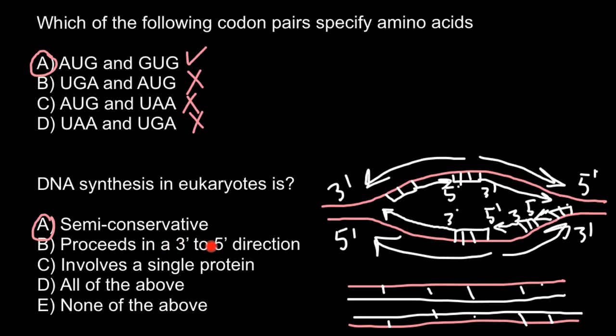And of course new strand of the DNA never grows from 3 prime to 5 prime. We always see growth from 5 prime to 3 prime direction. And of course answer C, it involves single protein, it's also wrong answer because not only DNA polymerase would be involved but many different proteins also would be involved in replication of the DNA, for example helicase. And answer D and E also would be wrong because we have only one correct answer here that replication of the double-stranded DNA is semi-conservative.